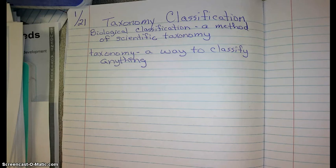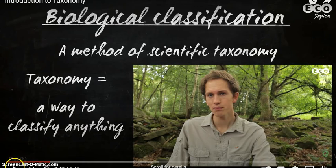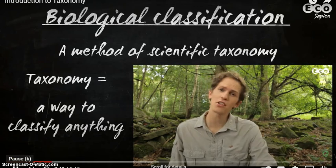Taxonomy is a way to classify anything. In science, you may find that the common name for something, such as a turtle, is not specific enough to differentiate between all the different species or all the different types of turtles. So we use taxonomy to subdivide categories of things until we get down to the specifics — there's only one particular species or organism that this could describe.